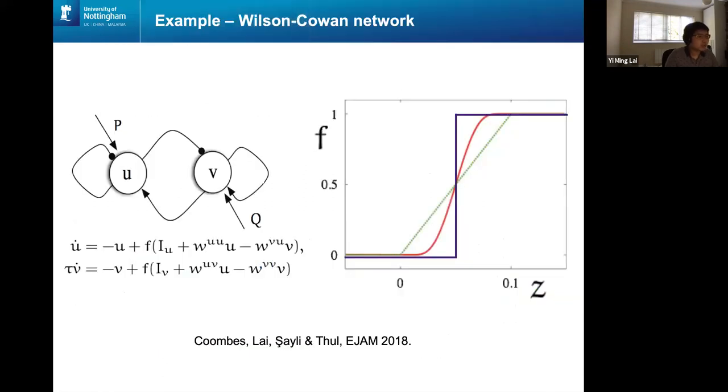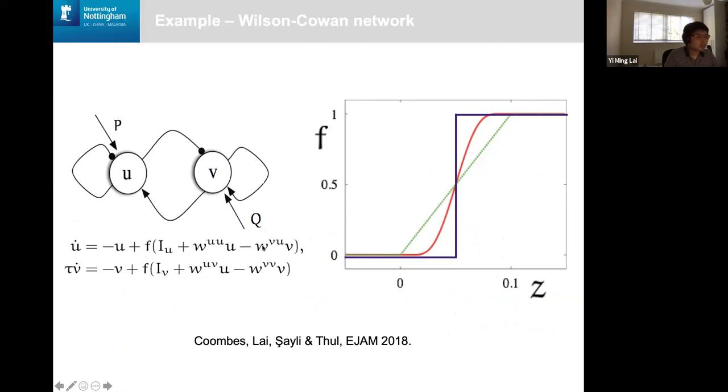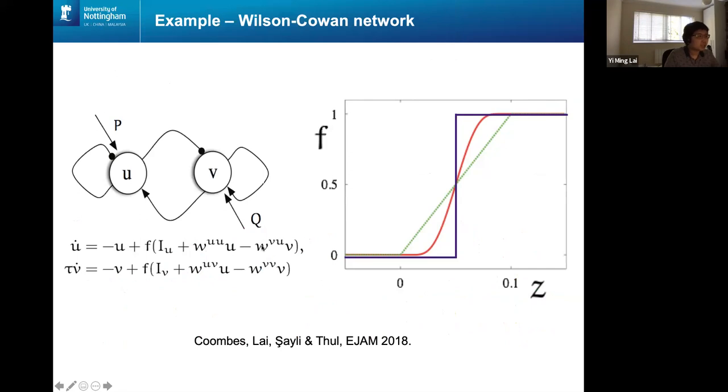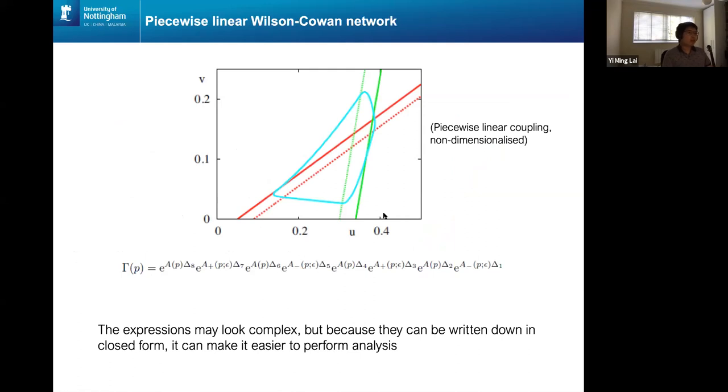So this is an example we worked on where, so previously we looked, the previous example was where each node was a piecewise linear integrate and fire neuron. This one is now each node is going to be a population of neurons, following the Wilson-Cowan model. And then, so typically there are sigmoid coupling functions in the network. And then we're just going to replace that with a piecewise linear function, but it qualitatively replicates the same sort of behavior. And then now you get a non-dimensionalized version of it here. And then we get this horrible stability expression for the operator in terms of these eight matrix exponentials, but because each of these matrices is now constant, it's much, you can actually do everything analytically. So that's why we've chosen this particular form for the model.